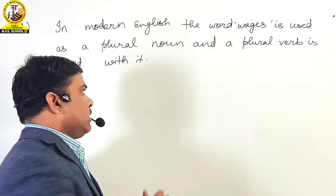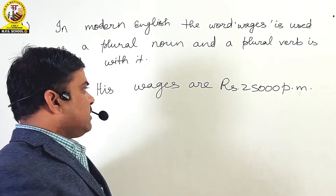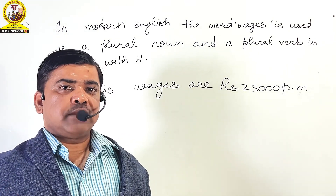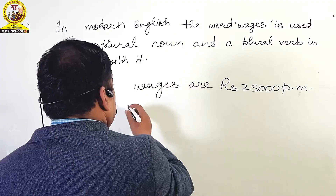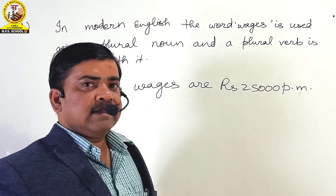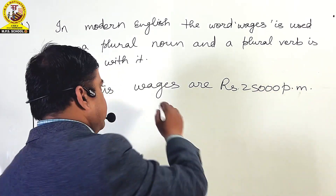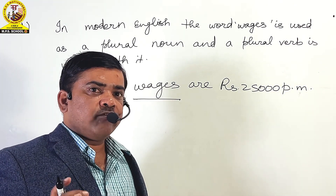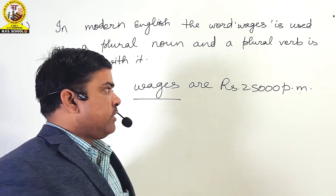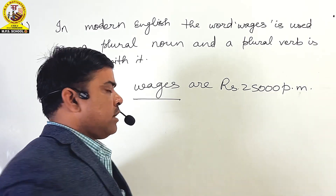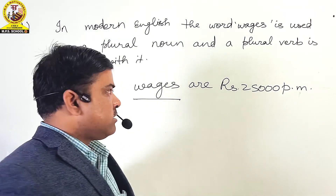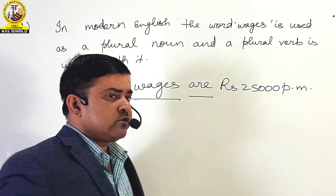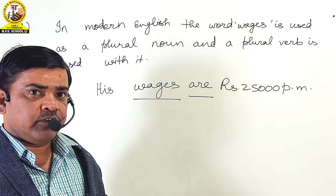For example: 'His wages are Rs. 25,000 per month.' In this sentence, we are seeing that the word WAGES has been used as the plural subject and a plural verb 'are' is used with it.